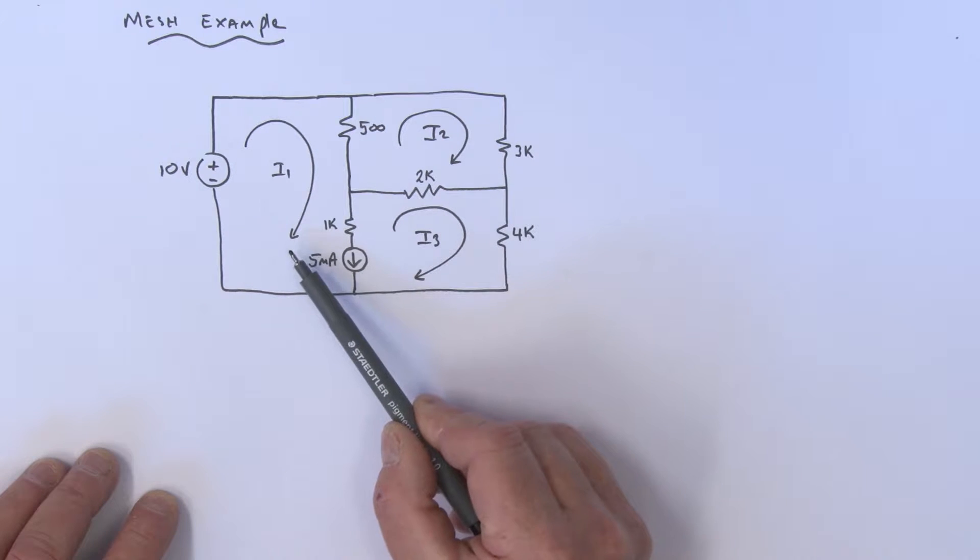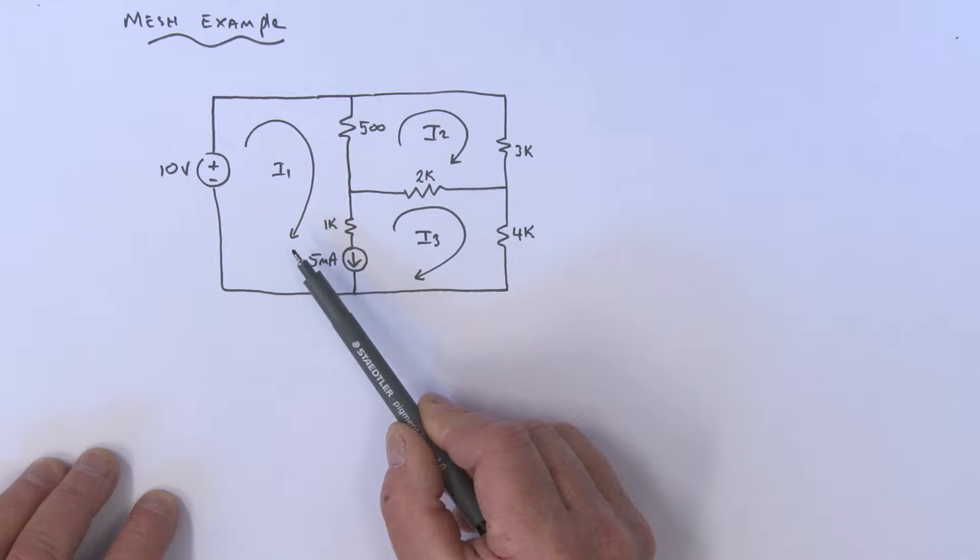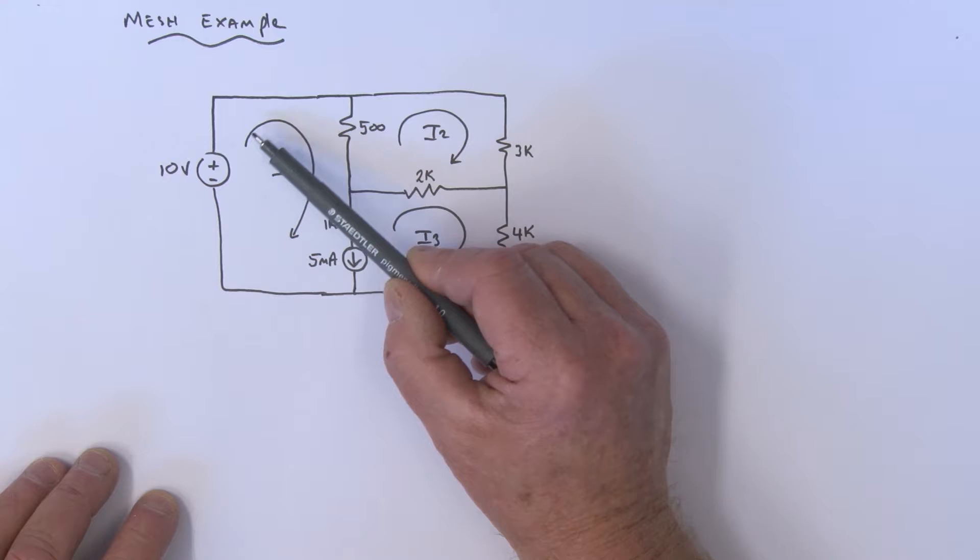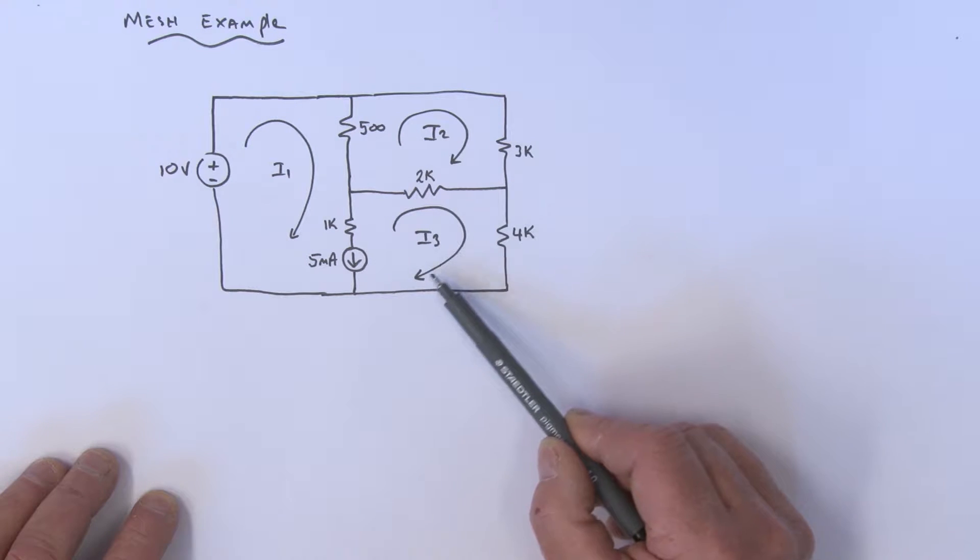When you traverse around a mesh current, you're really summing voltages. The issue is: how do I know what the voltage is across that current source? At this stage, I don't. So a way to deal with this problem is to use two mesh currents in my summation of voltages.